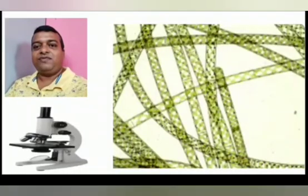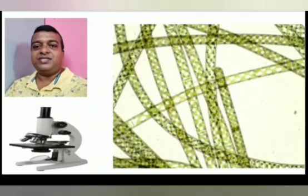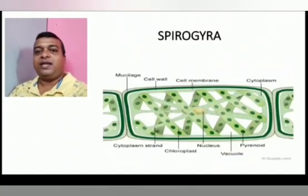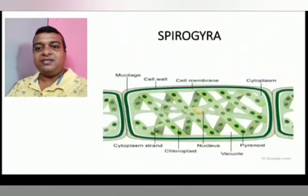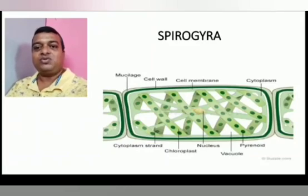When a filament of Spirogyra is observed under a compound microscope, its beautiful spiral ribbon-shaped structure can be seen. The chlorophyll-containing chloroplasts are arranged in a spiral manner inside the cells of Spirogyra, which is why it is named so.